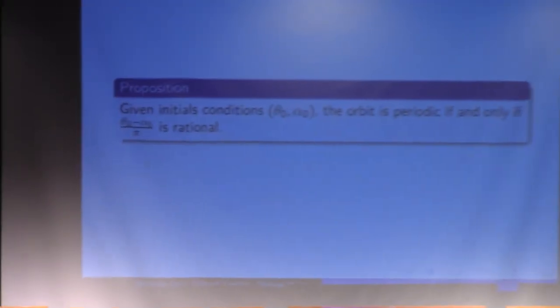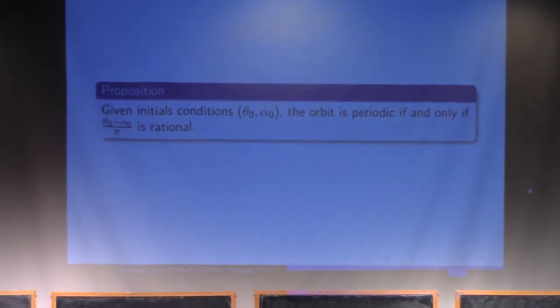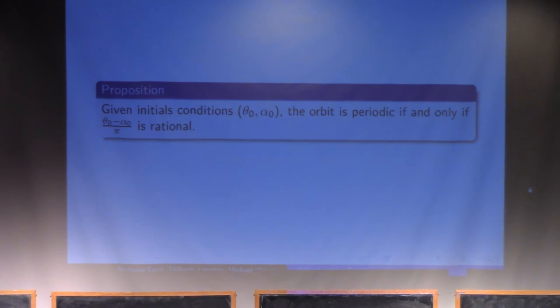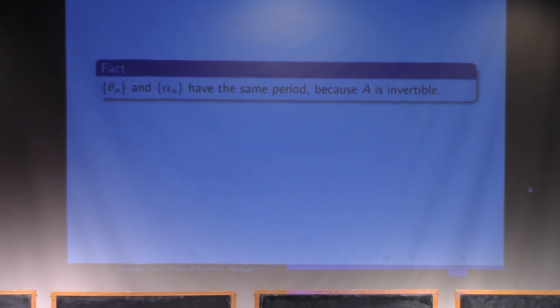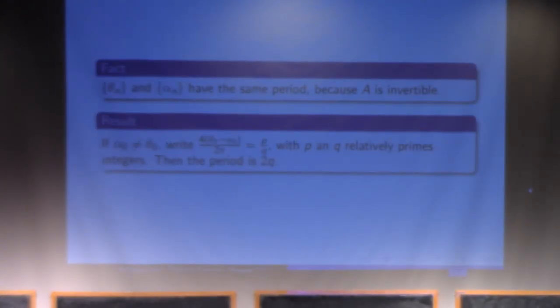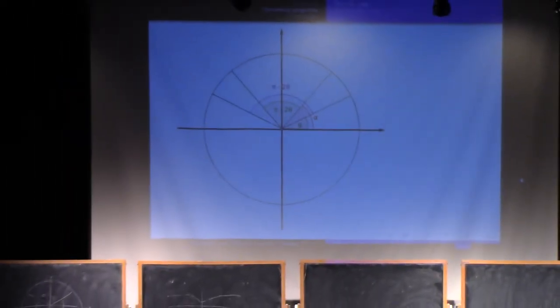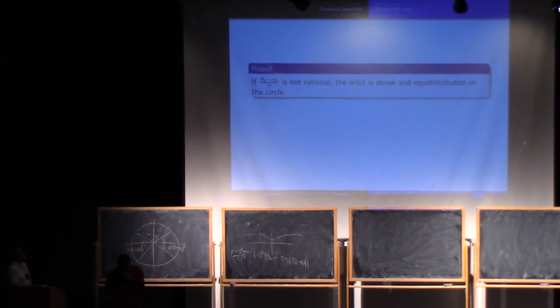Now we can try to figure out what are the dynamical properties of our system. And actually, because it's just a rotation with sometimes a symmetry, we just have basically the same characterization of periodic orbits. Periodic orbits is when the angle of the rotation over pi is a rational number. So actually, we can even figure out and compute the period, but I don't have time to explain because I've got other things to do. But actually, it's not really easy, but you can compute and figure out what is the period.